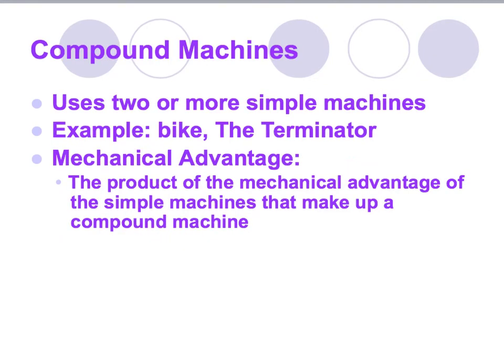Most machines we encounter in everyday life are not just one type of simple machine. Usually it's a team of two or more simple machines working together, which is called a compound machine — similar to how a compound word is made of two or more words combined. Examples include a bike, and — just as a joke — the Terminator could also be considered a compound machine.